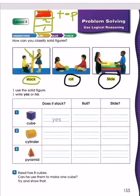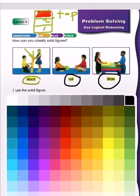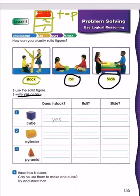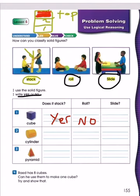I will now solve the chart for you. I use the solid figures and write yes or no. We have three shapes. The first shape is a cube. Does the cube stack? Yes, of course. Can the cube roll? No. Can the cube slide? Yes, of course.